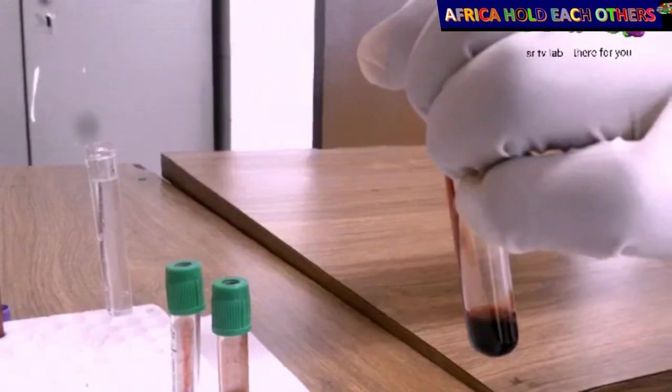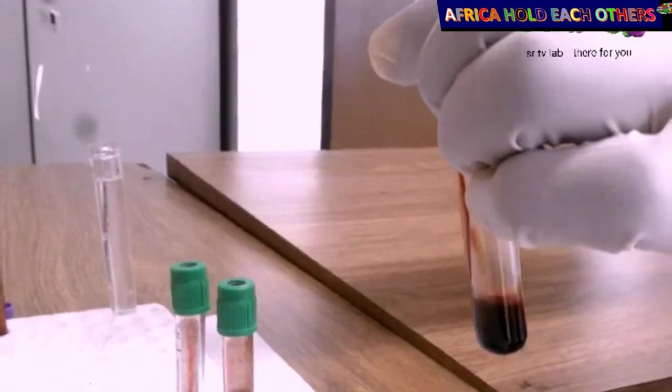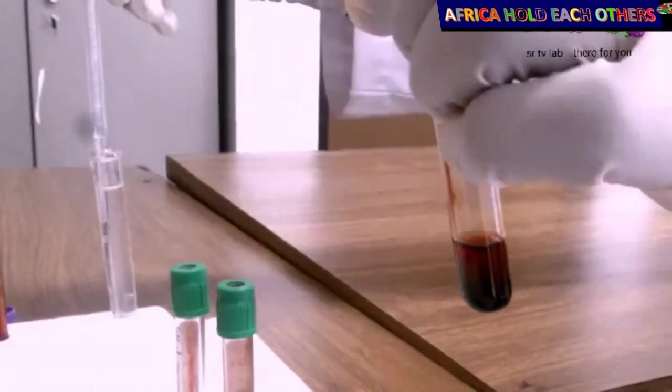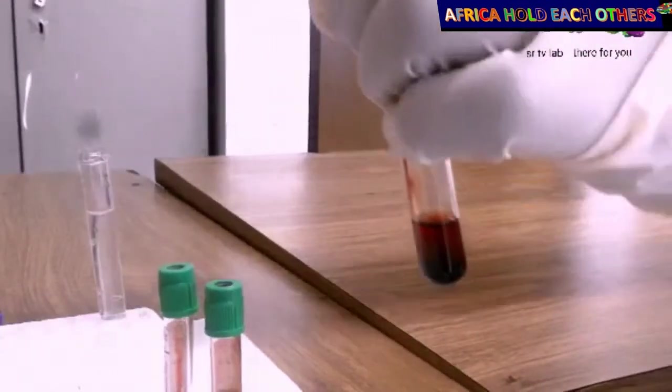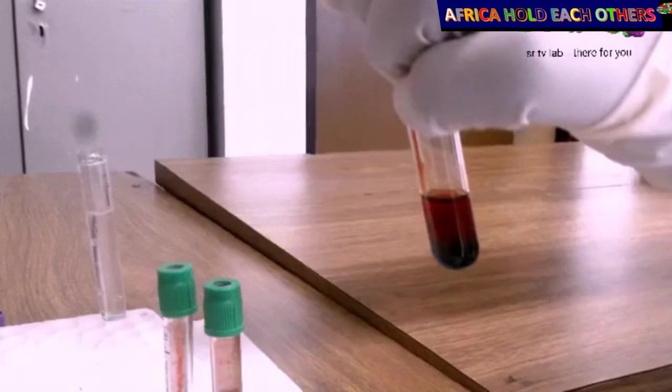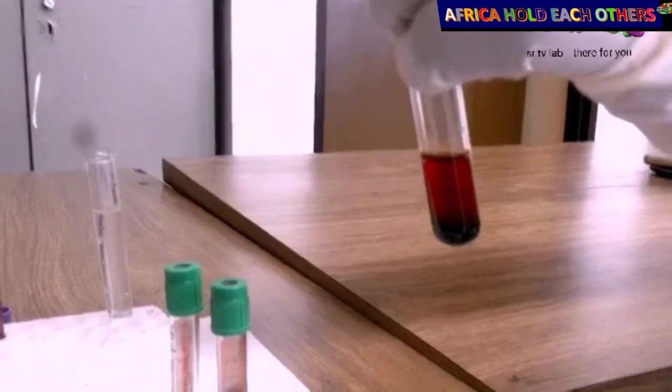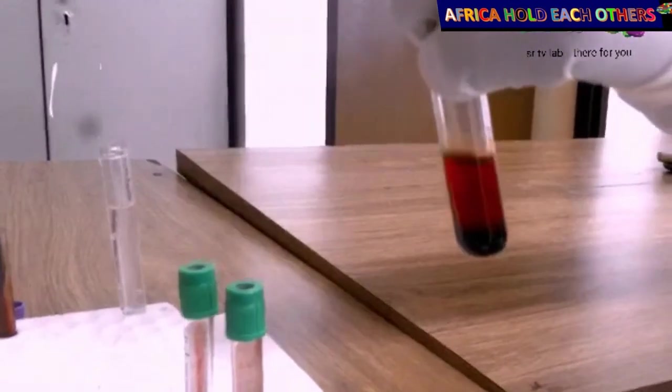And then we check. And we are expecting to see a translucent red color. Red blood cells have been dense. The color has been dense and now it's going to be translucent. It's going to be more transparent.